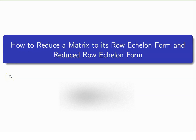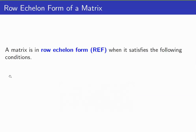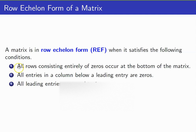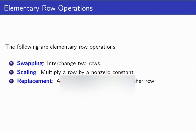In this lesson we are going to learn the process of reducing a matrix to its row echelon form and reduced row echelon form. Let us first recall the conditions that must be satisfied by a matrix in REF. All rows consisting of entirely zeros occur at the bottom. All entries in a column below a leading entry are zeros and all leading entries are equal to one. Let us also recall the following elementary row operations: swapping, scaling, and replacement.